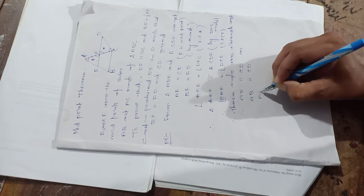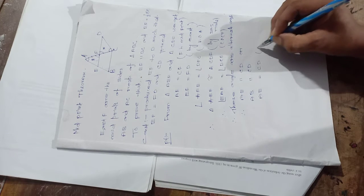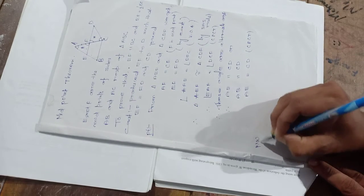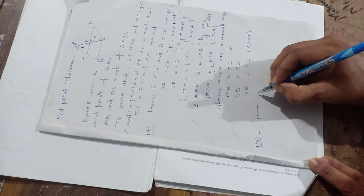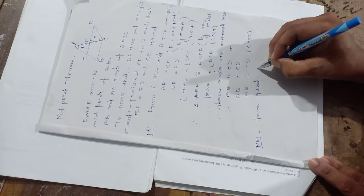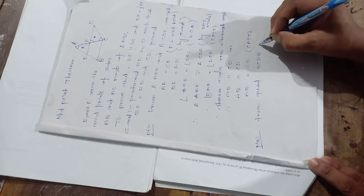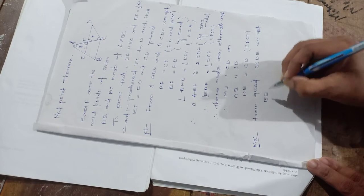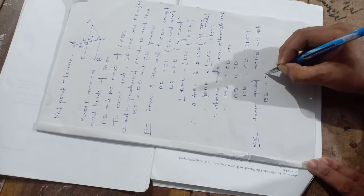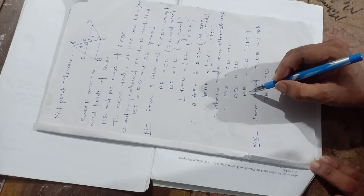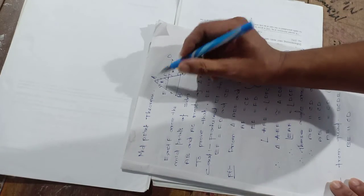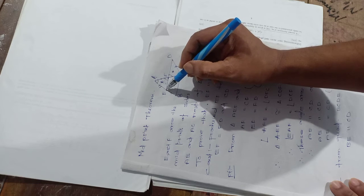Also we can say AE equals CD — this is also by CPCT. Now from quadrilateral BCDE, we get BE is parallel to CD. Since AE equals CD, we can say BE is also equal to CD because E is the midpoint of AB.